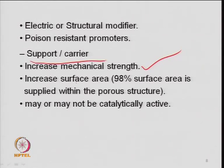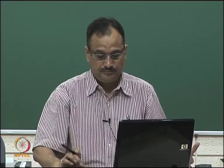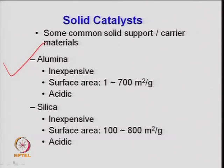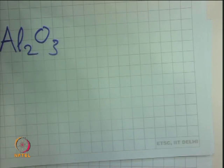Alumina is the most common support because it is inexpensive and has a wide range of surface areas — from 1 m²/g to 700 m²/g. Alumina is Al₂O₃ and is amphoteric in nature. The surface area comes from the pore structure. There can be different kinds of pores — pores between particles of alumina, and pores within the particle itself. The pore structure develops when you apply sufficient compression when making a pellet — more stress increases density.